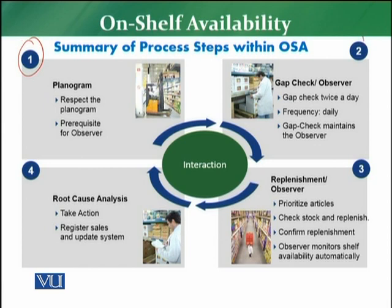The second component is the gap check through Observer. Gap check must be done twice a day: the first gap check should be one hour before store opening, and the second after eight hours, or normally at the end of one shift. The frequency should be daily, or at least twice a day. Doing it daily will serve the purpose, as the gap check maintains the Observer tool and provides correct or false alerts accordingly.